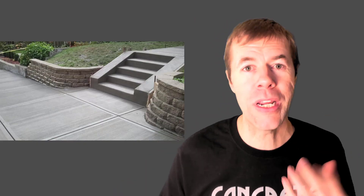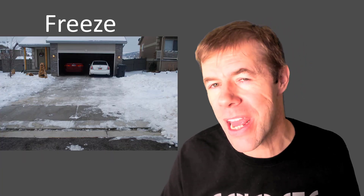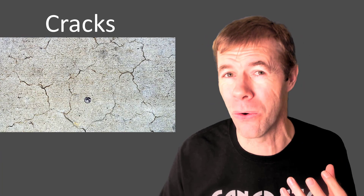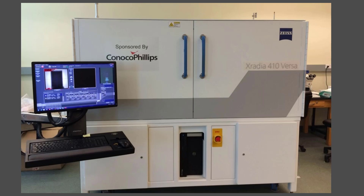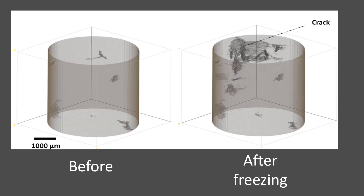So when we have concrete and it gets wet and then it freezes, it can crack — and we don't like cracks. To better understand this, we used to have a micro CT scanner at Oklahoma State University. We used it to look at the insides of concrete. We can see it in 3D. We can see the aggregates, the voids, the paste, all kinds of amazing things. And in that, we can see some cracks.